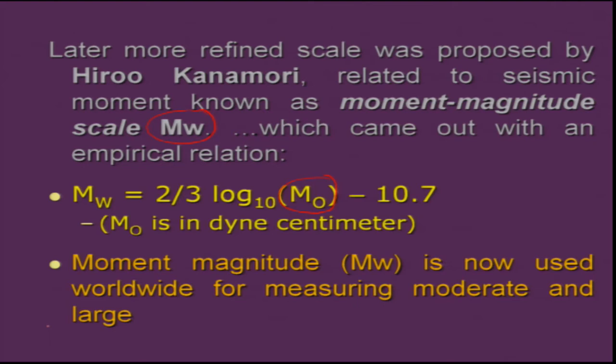This scale takes into consideration the energy radiated through the entire fault. It also includes the rupture area and the depth at which the earthquake occurred. Based on that you can calculate the complete magnitude termed as Mw, which is the most appropriate scale used worldwide for measuring moderate as well as large magnitude earthquakes.